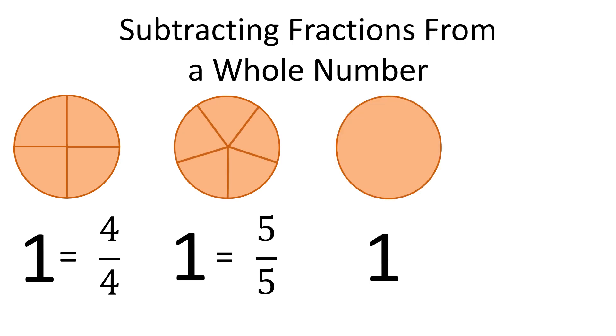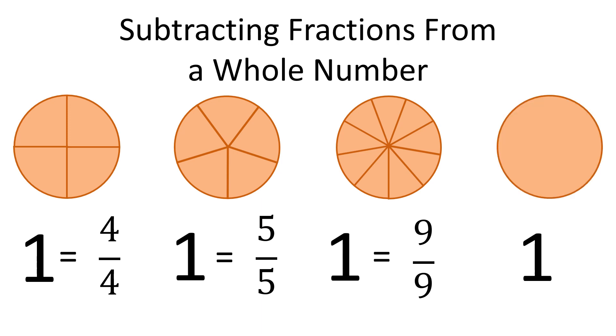The third one is divided into nine equal parts. And finally, the last one is divided into twelve equal parts. Each one of them is a whole but has been divided into different number of equal parts.